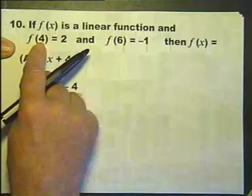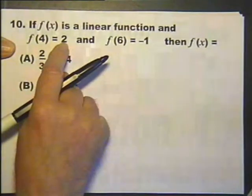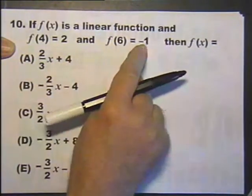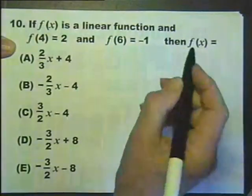We're given that when you substitute 4 into it, you get 2. When you substitute 6 into it, you get -1. And we're going to find out what the function is.